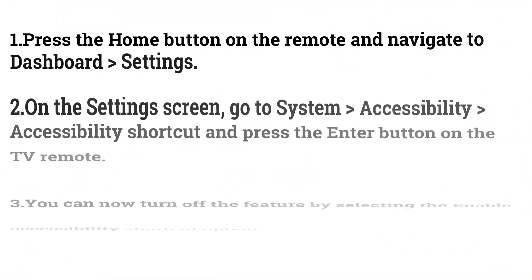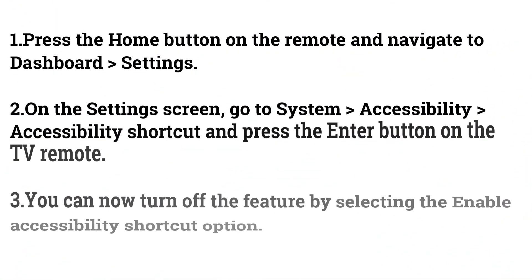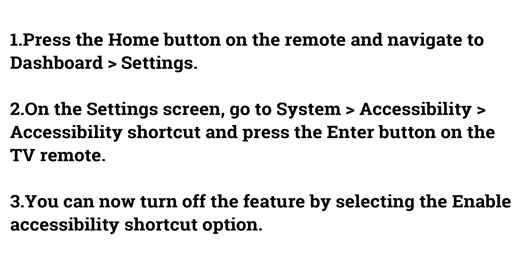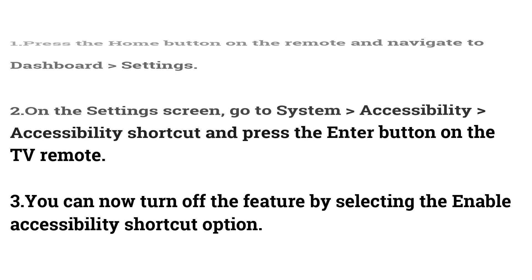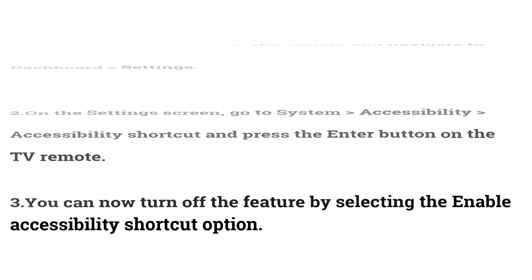Turn off Accessibility Shortcut on Sony TV. Press the Home button on the remote and navigate to Dashboard > Settings. On the Settings screen, go to System > Accessibility > Accessibility Shortcut and press the Enter button on the TV remote. You can now turn off the feature by selecting the Enable Accessibility Shortcut option.